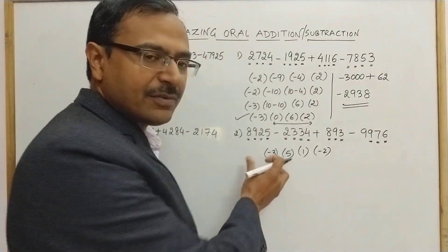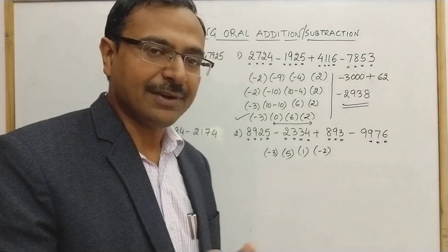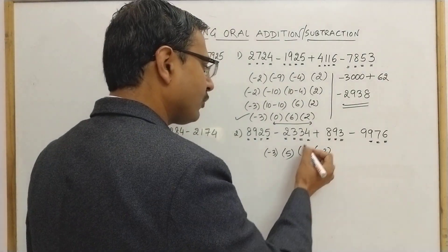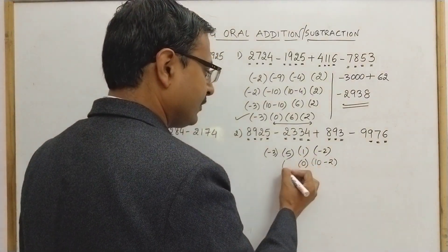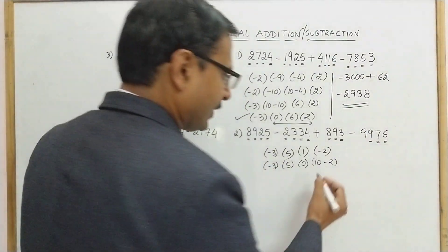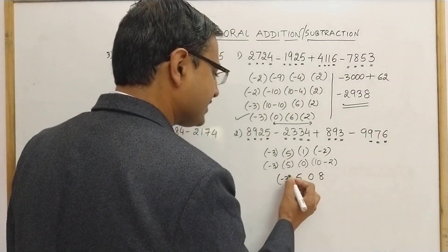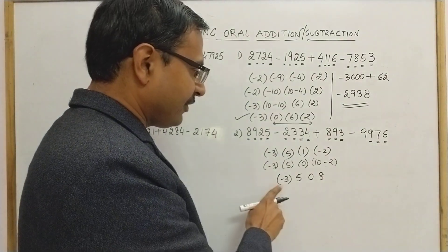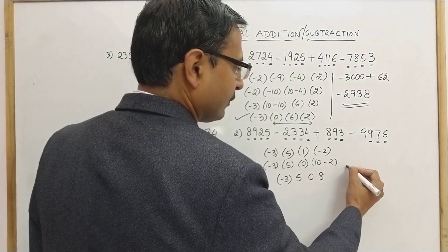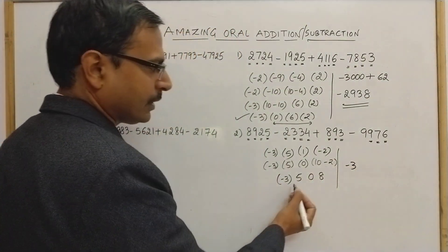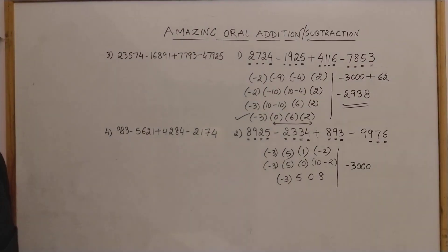Apart from the leading digit which must be negative, another number is also negative here, so I need to convert that to positive first. Borrow one from here: this becomes 10 minus 2, this reduces to zero, so now I have 0 here, 5 here, and minus 3 leading. So I've reached the required step where the first number is negative and all others are positive.